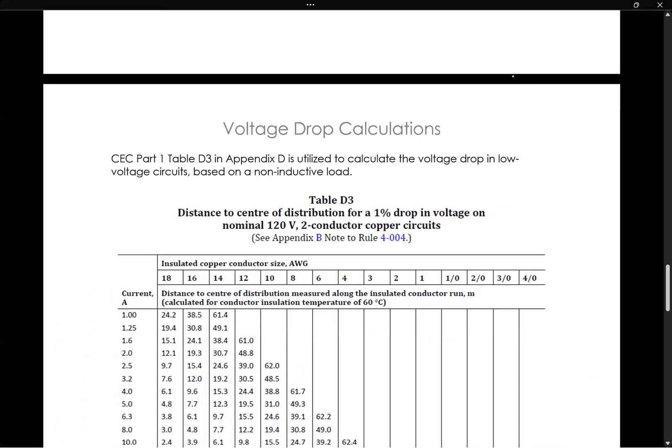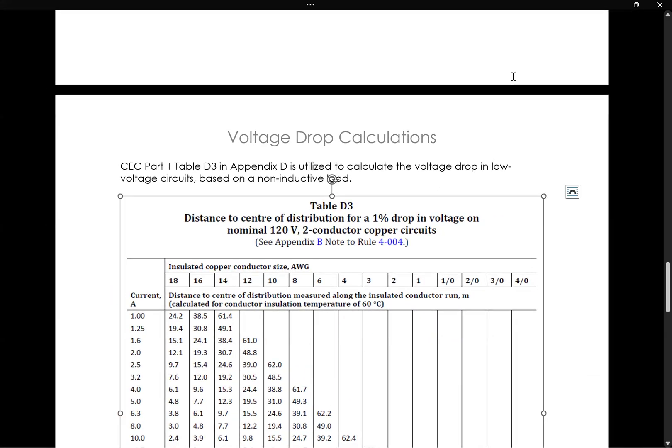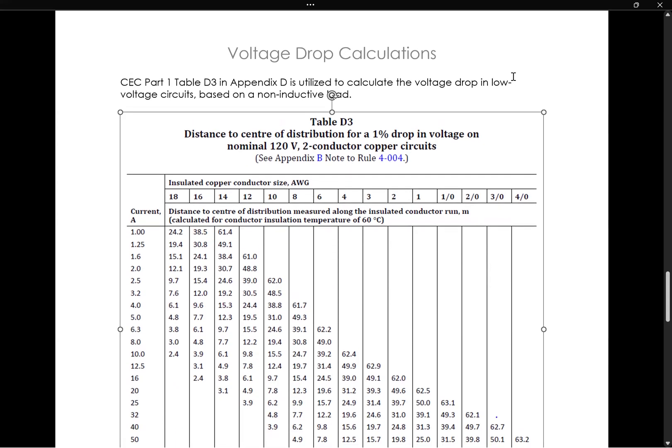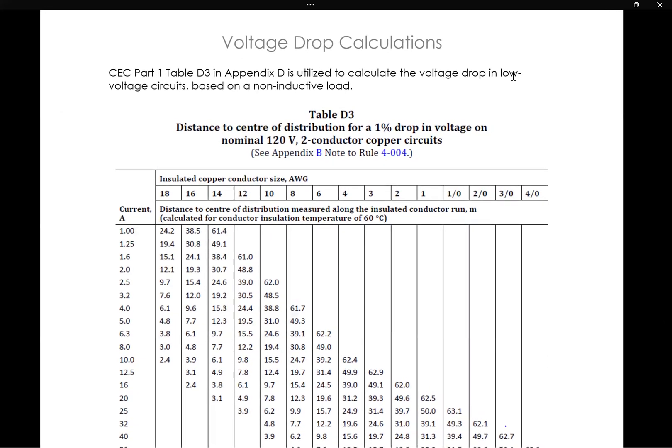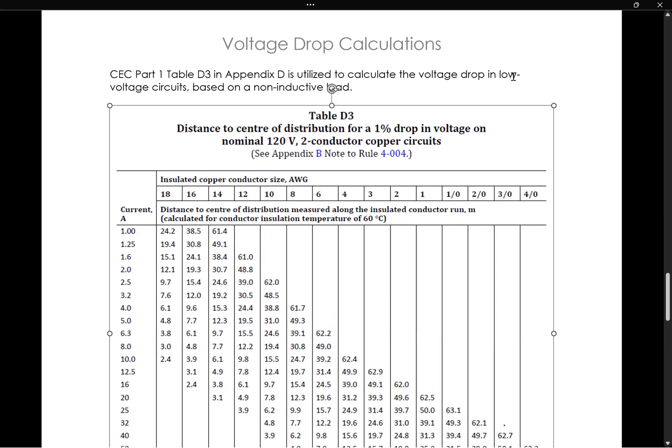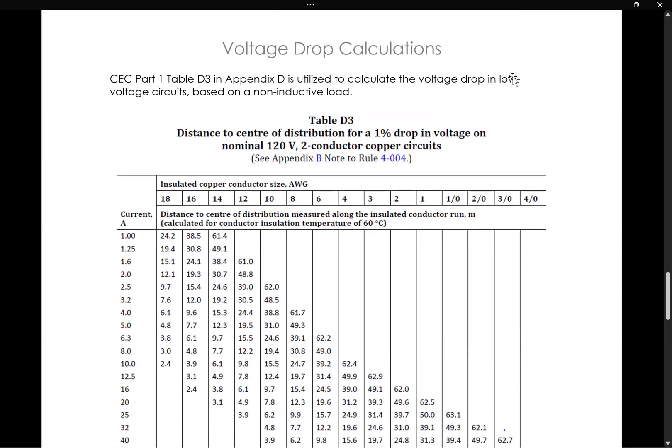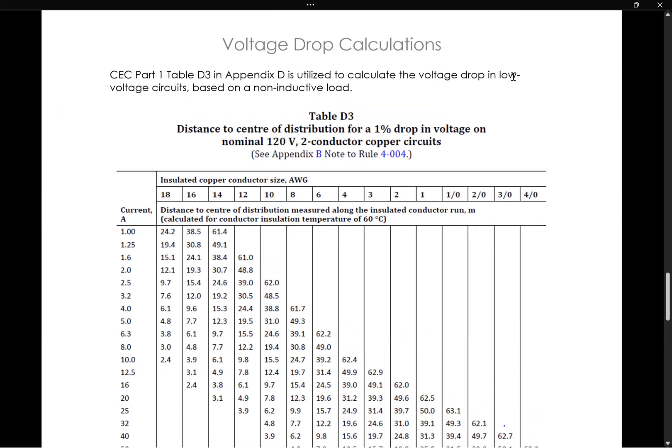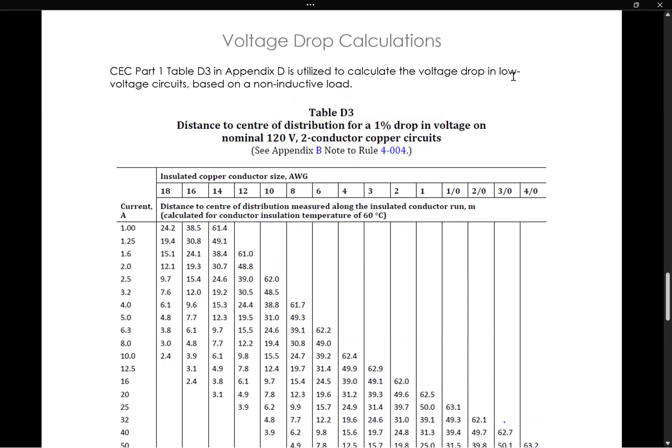So of course our Canadian Electrical Code doesn't have our tables sitting right there in the code. The tables sit in sections that include all of the tables. Appendix D is one of those sections that has all of the tables. And this particular table that is going to apply to rule 102 about voltage drop is called table D3 that we know and love. And so that's the table that is used to calculate the voltage drop in low voltage circuits based on non-inductive loads.